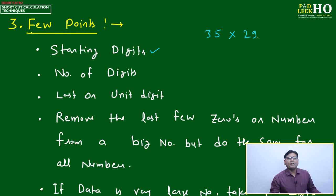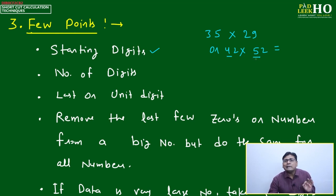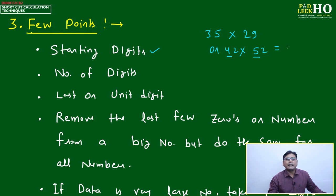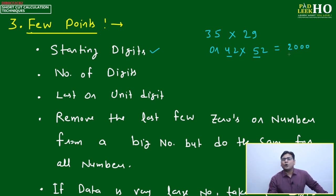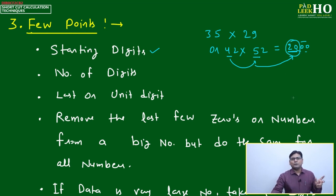For example, if you multiply 35 by 29, or 42 by 52, the starting digits decide the result. For 42 × 52, multiply 4 and 5 to get 20, then put two zeros, giving approximately 2000. This '20' based on multiplying the starting digits remains almost intact — the answer might be 2022 or 2135, but these '20' hundreds will essentially be correct. So the starting digit determines your net output.